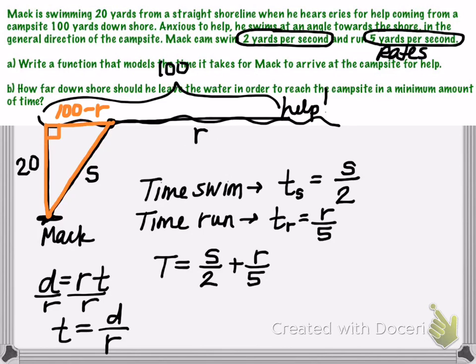The three sides of a right triangle are related by the Pythagorean theorem. So Pythagorean theorem is going to be the leg of the triangle, 20 squared, plus the second leg, which is 100 minus R, squared, is equal to the hypotenuse squared, which is S squared.